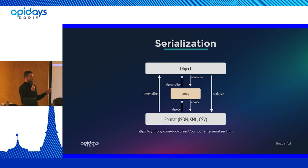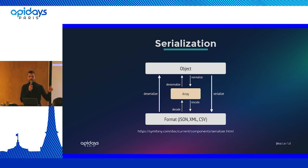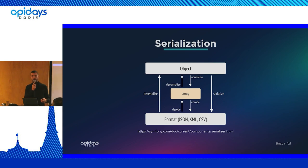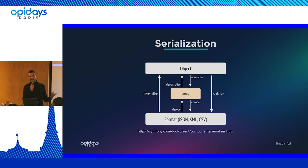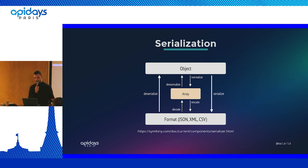Then comes the encoding part. The encoding takes that standardized structure - which acts as the interface between the data stream and the initial structure - and converts it into a data stream. About deserialization, of course, it's the exact opposite: we take the data stream, decode it into an array, and then convert that array into the complex data structure, hydrating the object and so on.